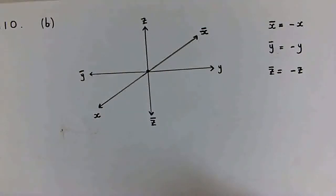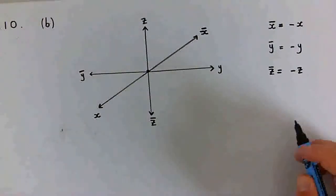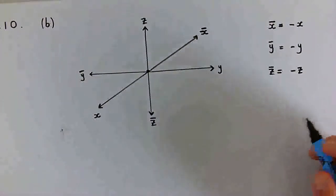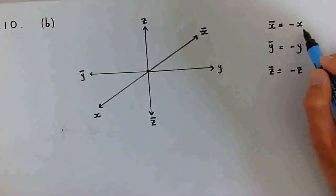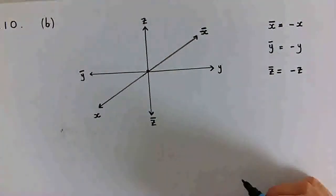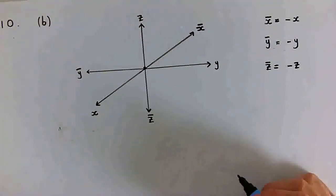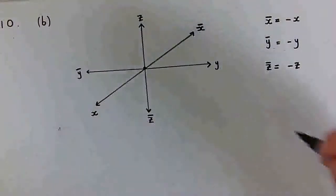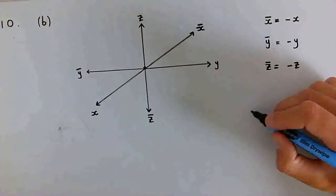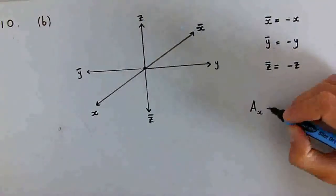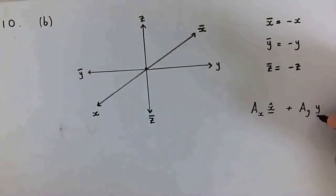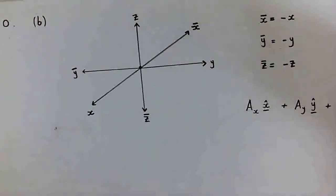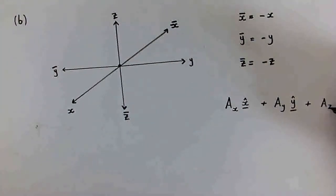Part B wants us to determine how the components of a vector transform under an inversion of coordinates, which is the case where the modified x-coordinate is simply the negative of the original x-coordinate, same for the y and same for the z. So we're in 3D space, and let's assume we have a vector Ax x-hat plus Ay y-hat plus Az z-hat.